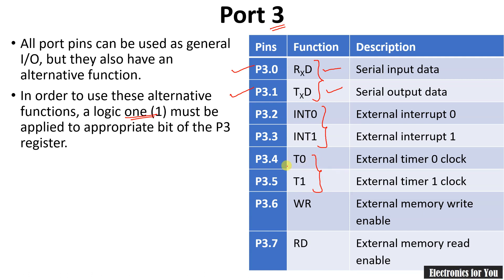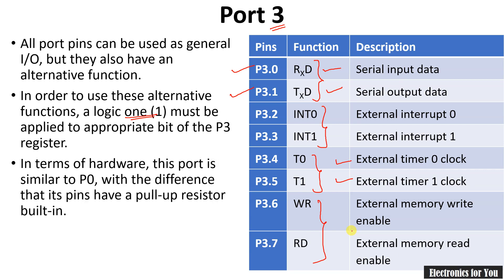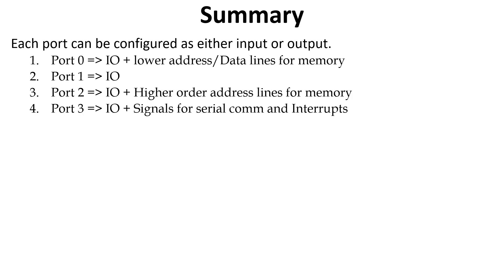T0 and T1 are interrupt signals for the timers — they serve as the external Timer 0 clock and external Timer 1 clock. Apart from this, Port 3 also has WR (write) and RD (read) signals. Whenever external memory is used, WR bar and RD bar pins are used for external memory read and write operations. Port 3 also has internal pull-up resistance. These were the functions of the ports of the 8051 microcontroller. If you like this video, please subscribe to our channel and share it. Thank you.